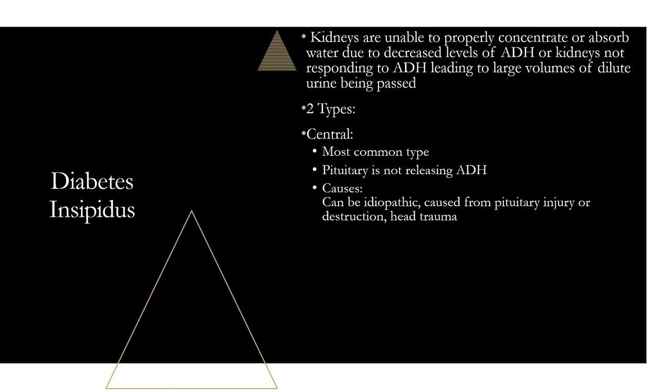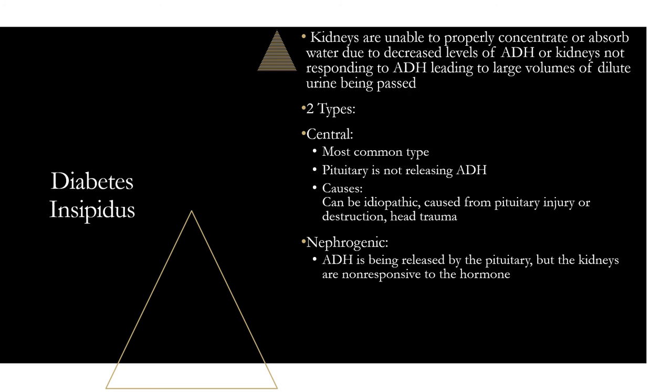Central diabetes insipidus is the most common type. For some reason the pituitary is not releasing ADH — sometimes idiopathic, other times caused by injury, ischemia, or head trauma affecting the pituitary gland. ADH production is decreased. Nephrogenic diabetes insipidus is less common — ADH is being produced just fine by the pituitary, but the kidneys are not responding to the hormone and are not retaining water.